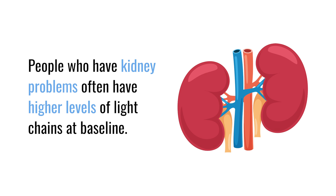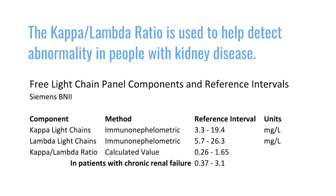People who have kidney problems from any reason — whether that might be diabetes or hypertension — often have higher levels of light chains at baseline. We use the kappa-to-lambda ratio to help determine if there is a true abnormality. People with a creatinine level above 1.5 mg/dL might have a slight elevation in that ratio, but usually it's not significant once everything settles out.